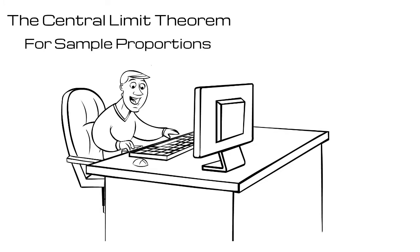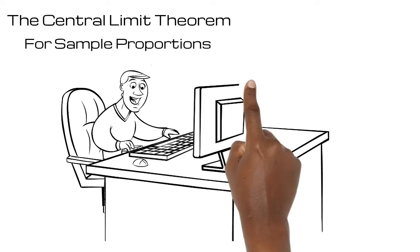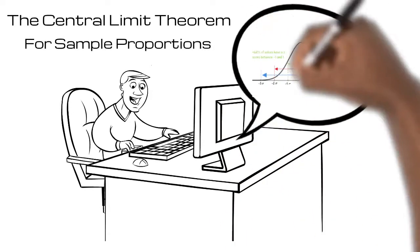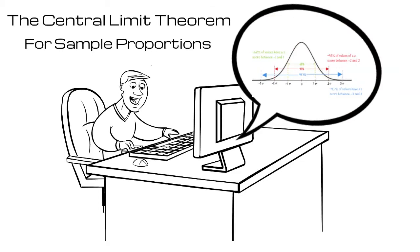The Central Limit Theorem tells us what to expect if we collect data from multiple different random samples. In a previous unit, we learned about the normal model and how data can be normally distributed. Good news! The normal curve is useful in other circumstances.